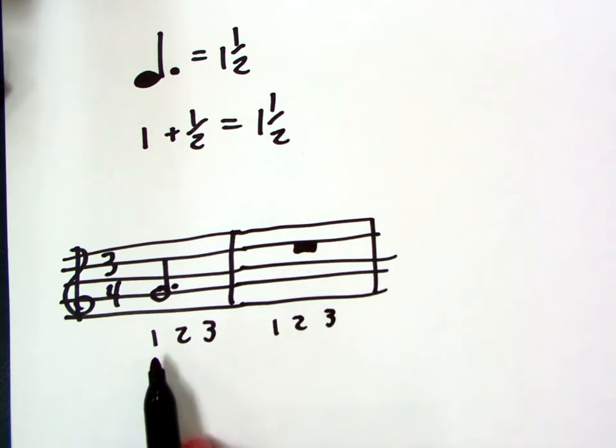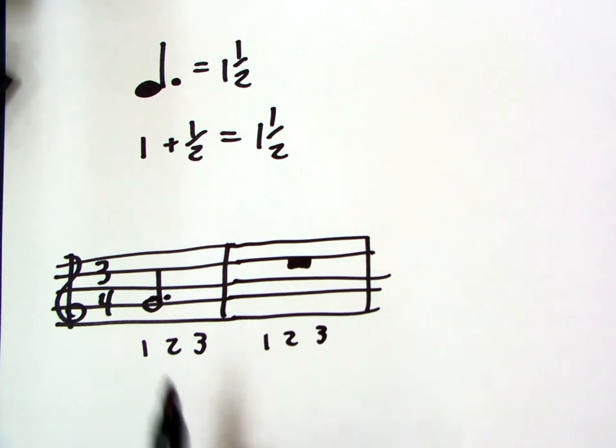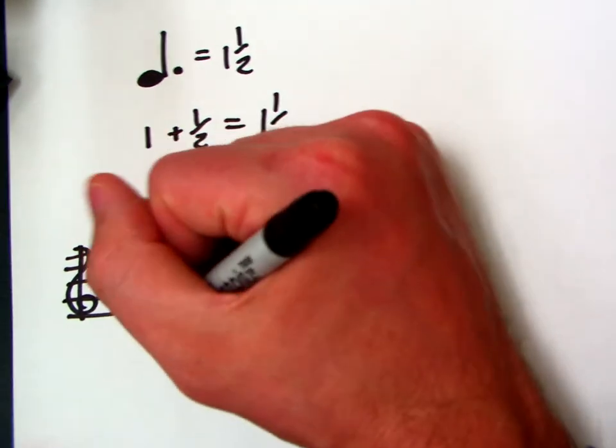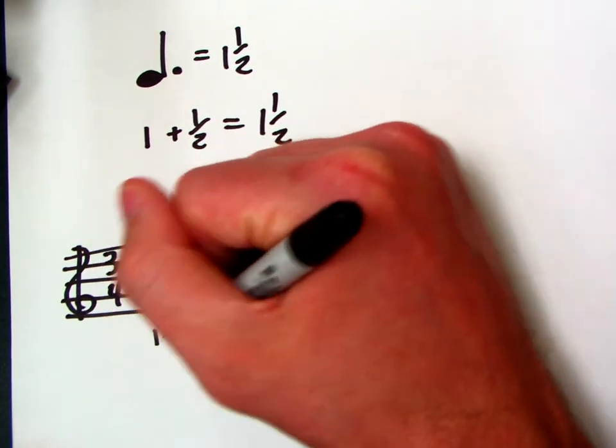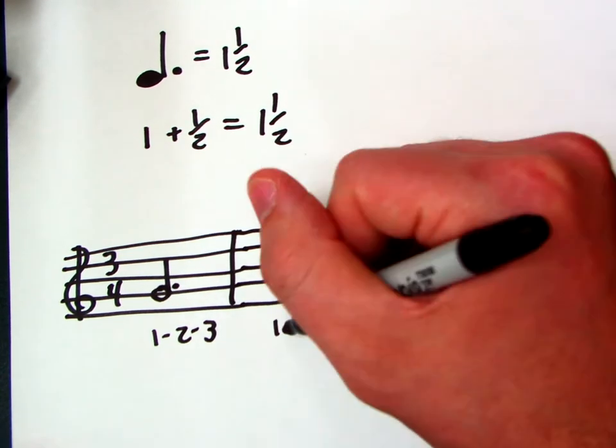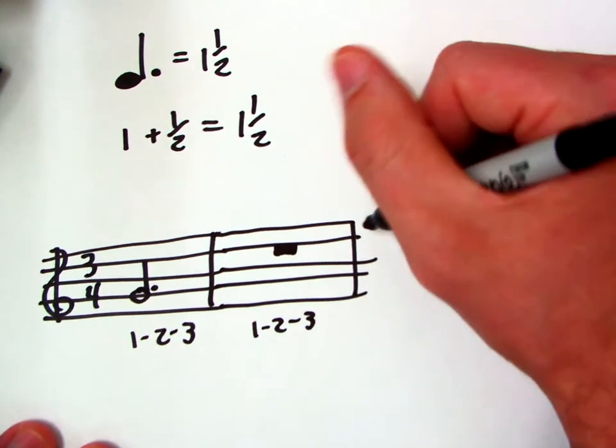Now, whenever I'm noting the beats below it, to show that this note gets all three beats, I usually like to go like this, which tells me that they're all connected to this one note. Same thing here. One, two, three.